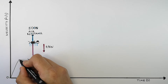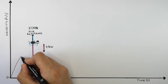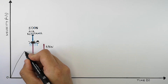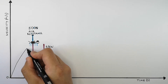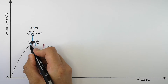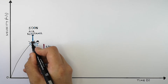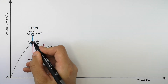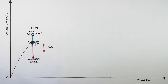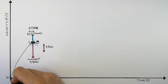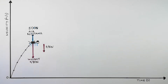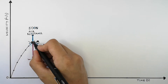The line I'm drawing now on the velocity-time graph shows that velocity is increasing with time, which indicates acceleration because velocity is increasing. At this point, the skydiver's velocity has increased.